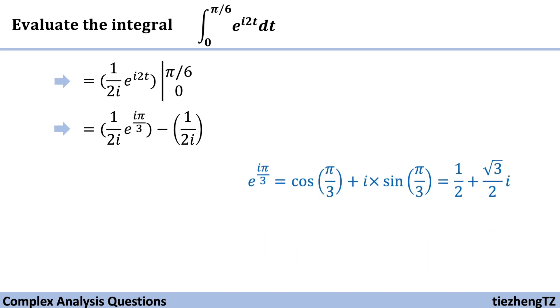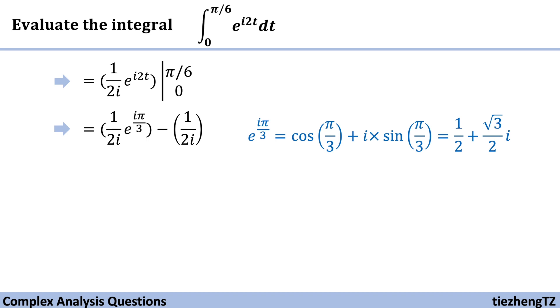Also we need to know e^(iπ/3) should be cos(π/3) + i*sin(π/3), and it becomes 1/2 + (√3/2)i.